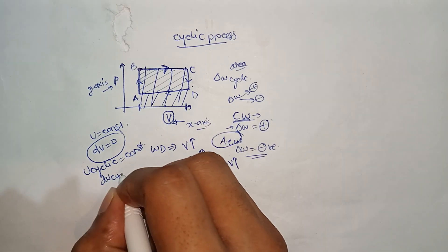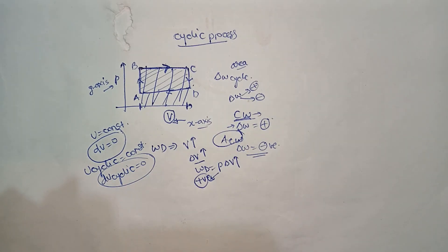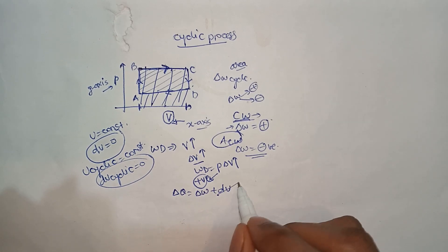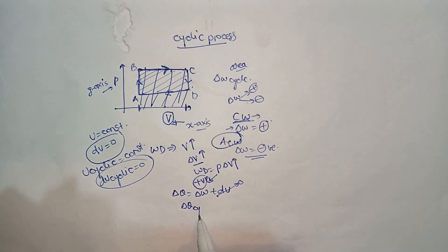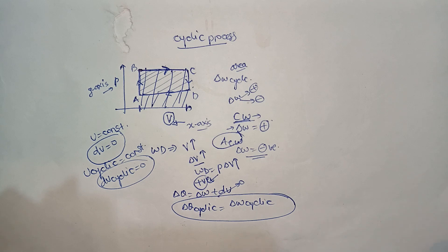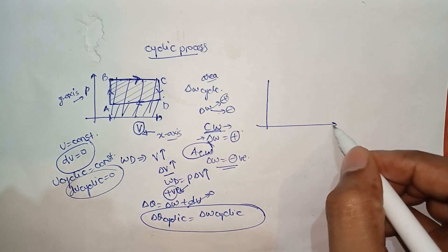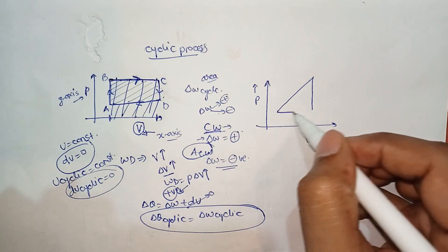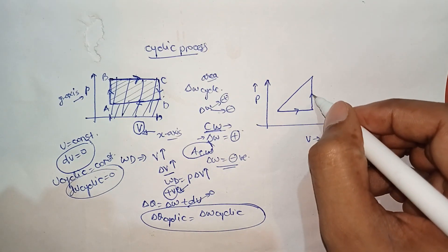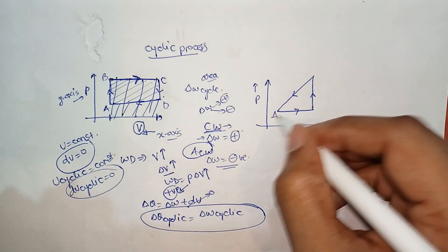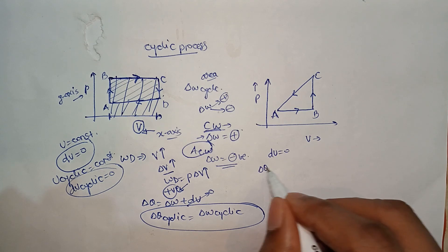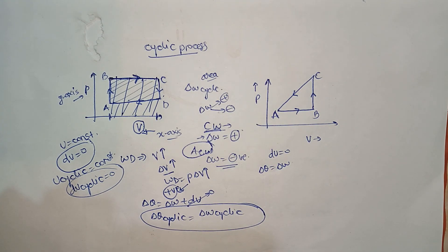Important: in a cyclic process, internal energy is constant, so the change in internal energy ΔU = 0. Therefore, from the first law of thermodynamics: ΔQ_cyclic = ΔW_cyclic. These are very important results to remember.